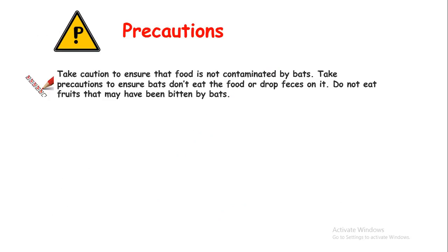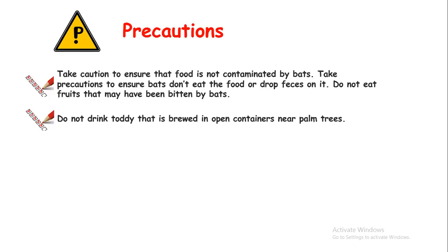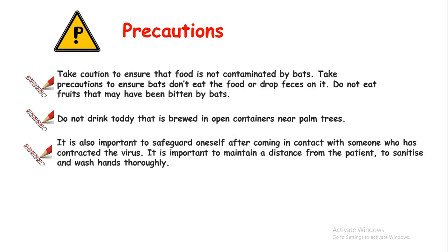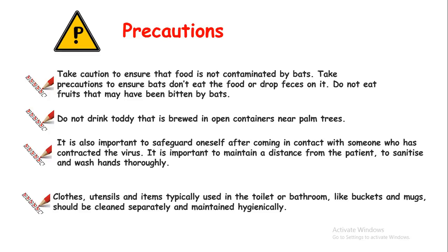What precautions can we take to keep ourselves and our families safe? First, don't eat any fruit that is contaminated by bats or that seems to have been consumed by any animal. Second, don't drink common drinks like toddy or date palm sap, as these could be contaminated with bat saliva or urine, which may contain the virus. If anyone is infected, ensure they are in isolation, and contact with the patient should only be with gloves and a proper face mask, otherwise the disease can spread very rapidly. Normal hygiene, washing clothes and utensils properly, and sterilizing them are also important measures.